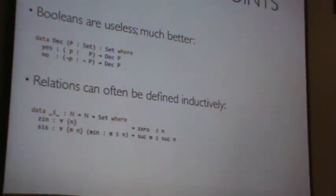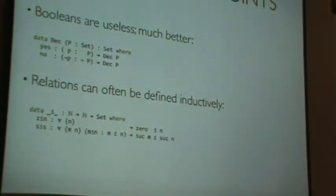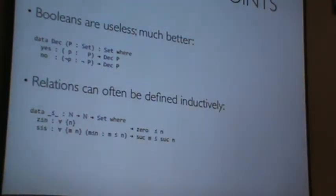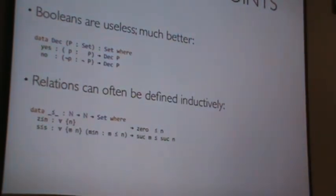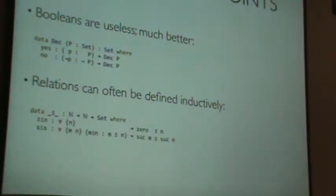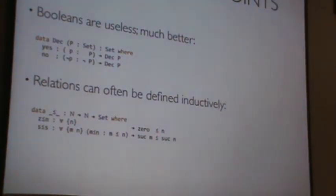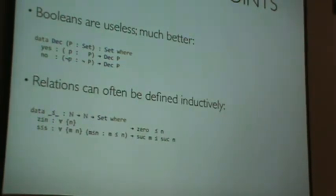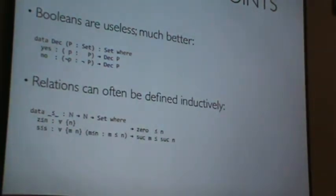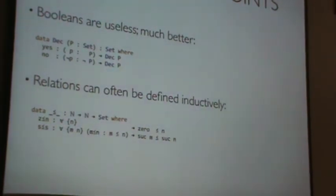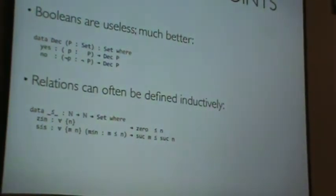Relations are often defined inductively, or possible to define inductively. Things like less than on naturals. You could write it as a function and say zero is less than anything, or define it recursively as a function with true and false. This is a lot more convenient to work with in Agda, or any language that really supports inductive families.